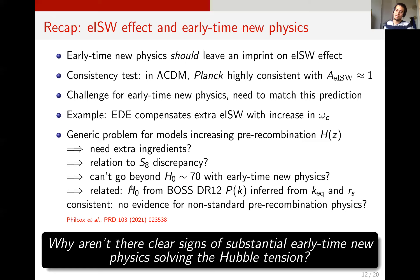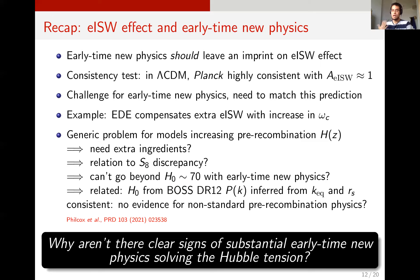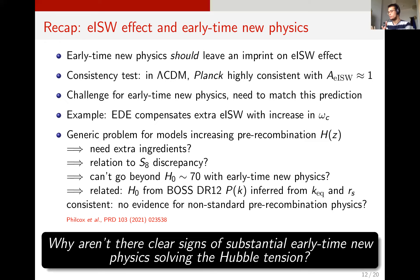There's another interesting consistency test we heard about at the conference from Oliver Philcox: you can infer H0 from the full-shape galaxy power spectrum using only sound horizon or only equality scale data. The two inferences are consistent, and this is a strong consistency test for there being no new physics before recombination. All these ingredients together paint a common picture where it's very difficult to solve the Hubble tension with early time new physics alone, especially since there are no clear signs of this new physics in CMB data.